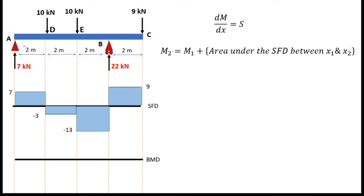In this beam, at A there is a pin support. A pin support has no resistance to moment, meaning the bending moment at A is zero. So the bending moment diagram starts at zero. At the ending point C there is a free end, meaning there is no resistance at all, so the bending moment is also zero at the ending point.